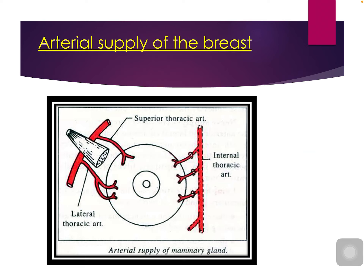Arterial supply of the mammary gland: two arteries come from the axillary artery — the lateral thoracic artery, which supplies the lateral part of the gland, and the superior thoracic artery, which supplies the upper part. Perforating branches of the internal thoracic artery supply the medial part of the gland and are called medial mammary branches.